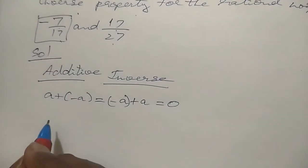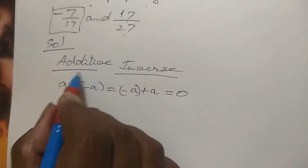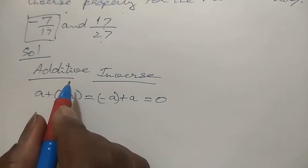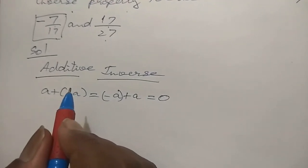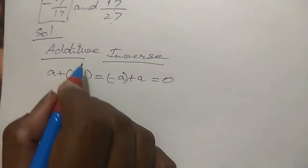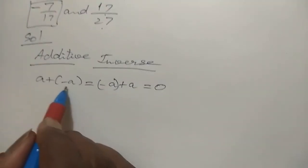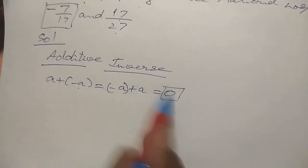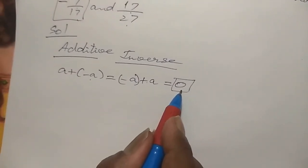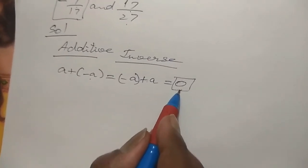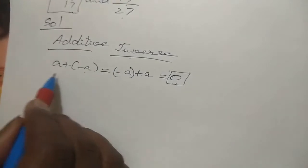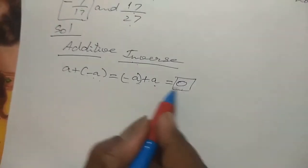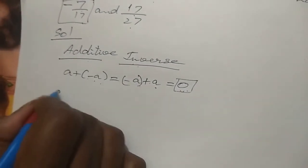This is a different concept. We know identity: for addition the identity is 0, for multiplication the identity is 1. For the inverse property, the additive inverse condition is a plus minus a equals 0. So here a equals minus 7 by 17.